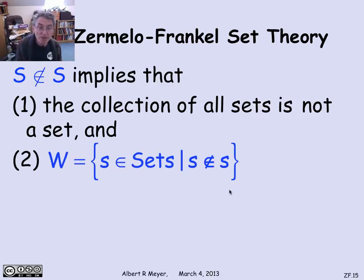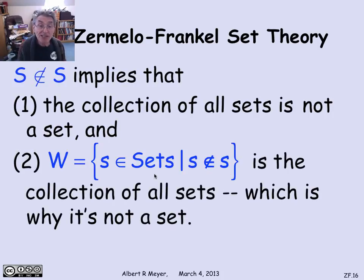The second thing it tells us is, remember the set W from Russell's paradox. W was the collection of sets not members of themselves. Well, now we've figured out this is all sets because no set is a member of itself. So the sets not members of themselves is everything. That's why W is not a set and not a member of itself, which explains how the foundation axiom resolves Russell's paradox.